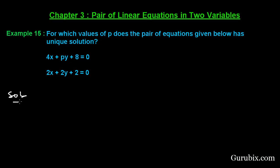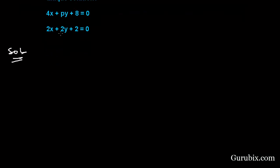So let us see how to solve this pair of equations for the value of P. Here we are given a1 equals 4, a2 equals 2, b1 equals P, b2 equals 2. And we know that the system of pair of linear equations in two variables has unique solutions if...